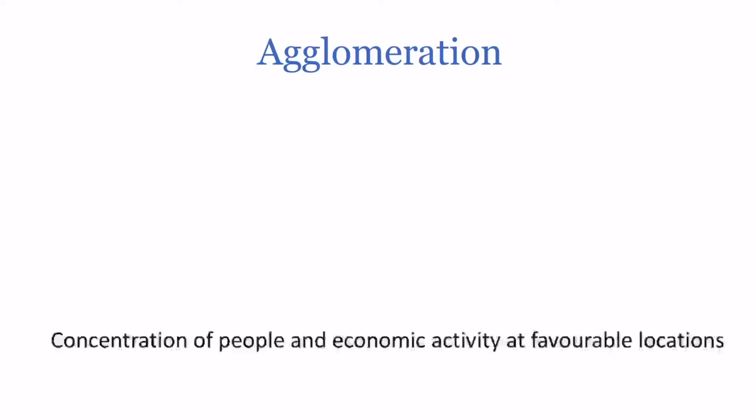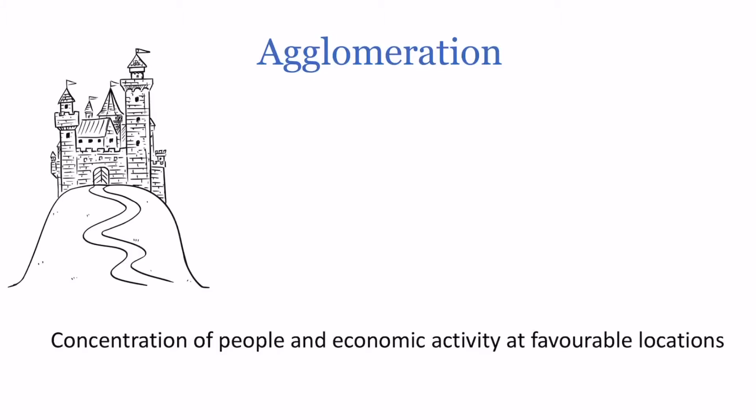The first process I'm going to talk about is called agglomeration. For any settlement to exist we need agglomeration. This is where people and economic activity concentrate in certain favourable locations. Historically, the first kind of places that people would have concentrated might be because of protecting themselves.